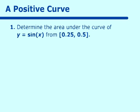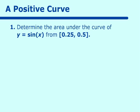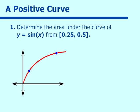But first, let us review area above a curve where the curve is positive. Determine the area under the curve of y equals sine x from 0.25 to 0.5 radians. We know that the curve of sine looks like this. What we are looking for is a portion in here, and we are looking for that area under the curve.